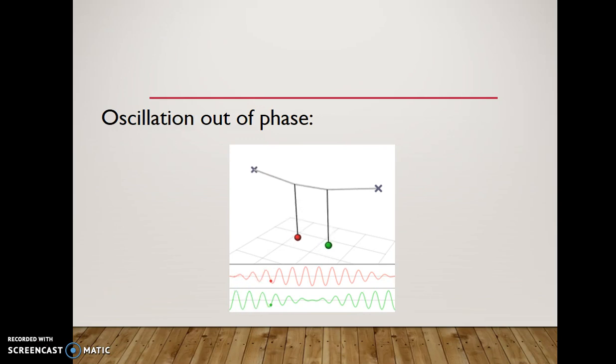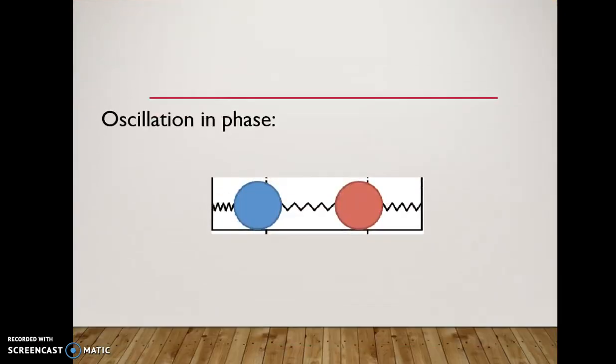There are two types of oscillation movements that we're going to touch on in this video. The first is both masses moving out of phase, and the second is in phase, therefore both in the same direction.